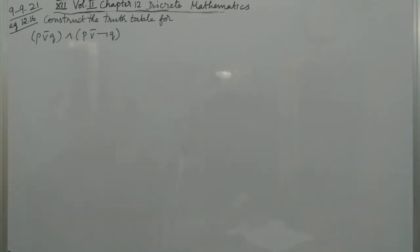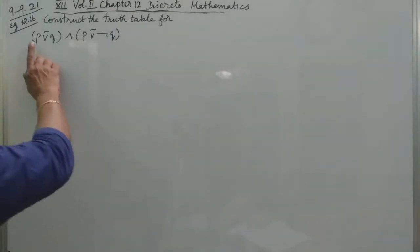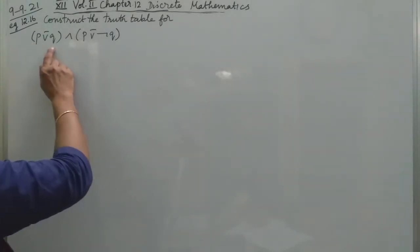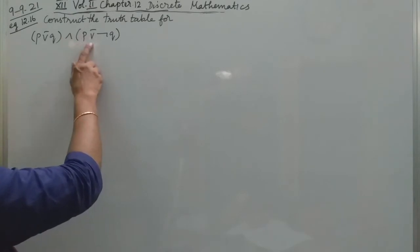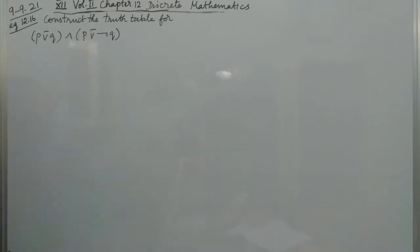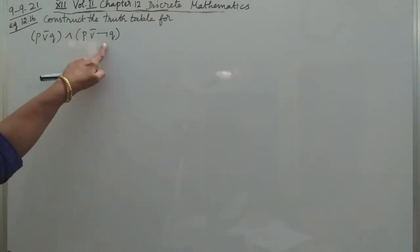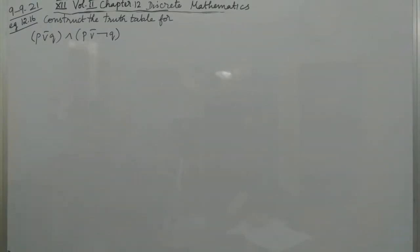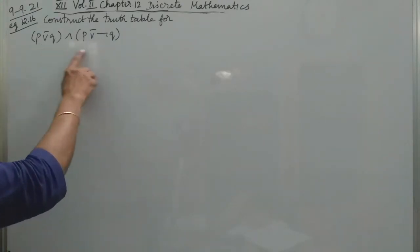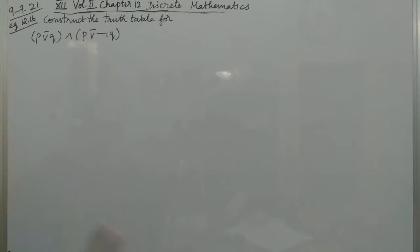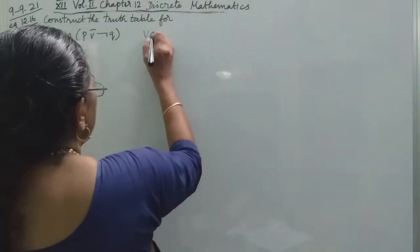Hello students. Now, example 12.16 — we need to construct the truth table for P exclusive-OR Q, CAP (AND) P exclusive-OR negation Q. This is P EOR Q ∧ (P EOR ¬Q). Looking at the first column, each column represents different statements, and the variables are two.